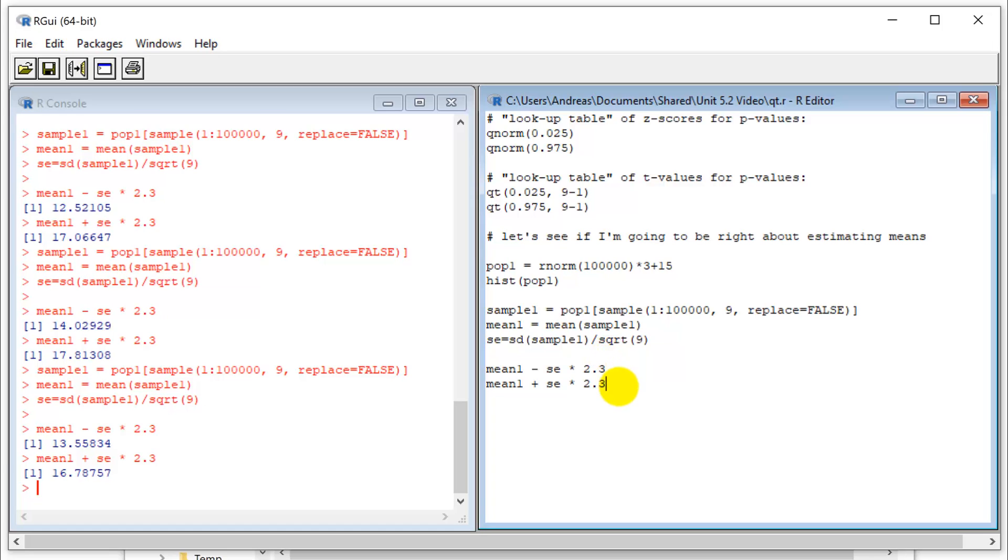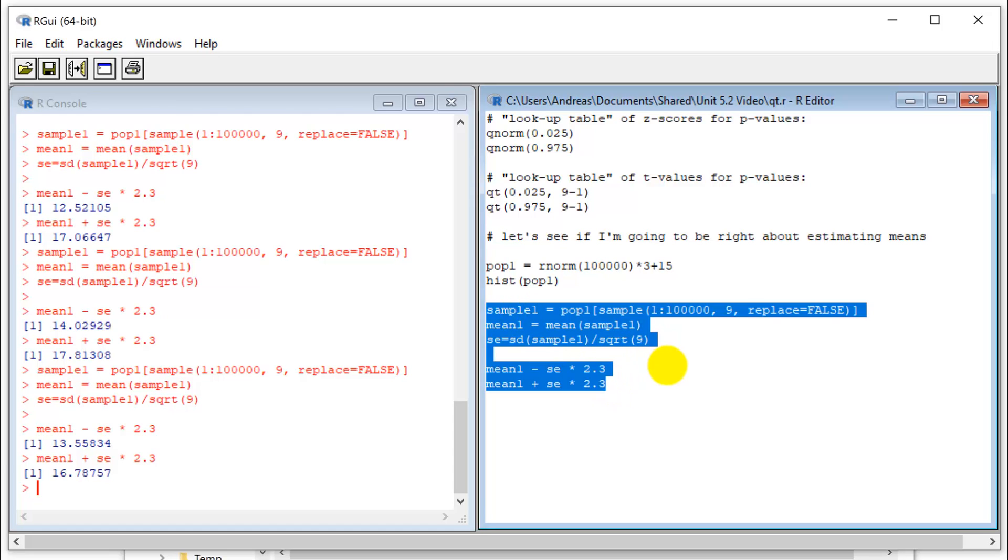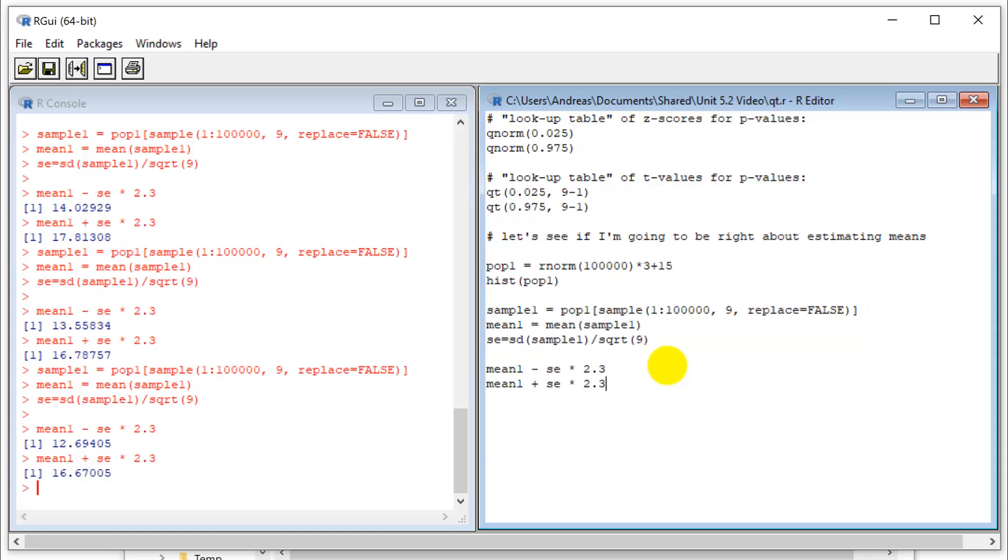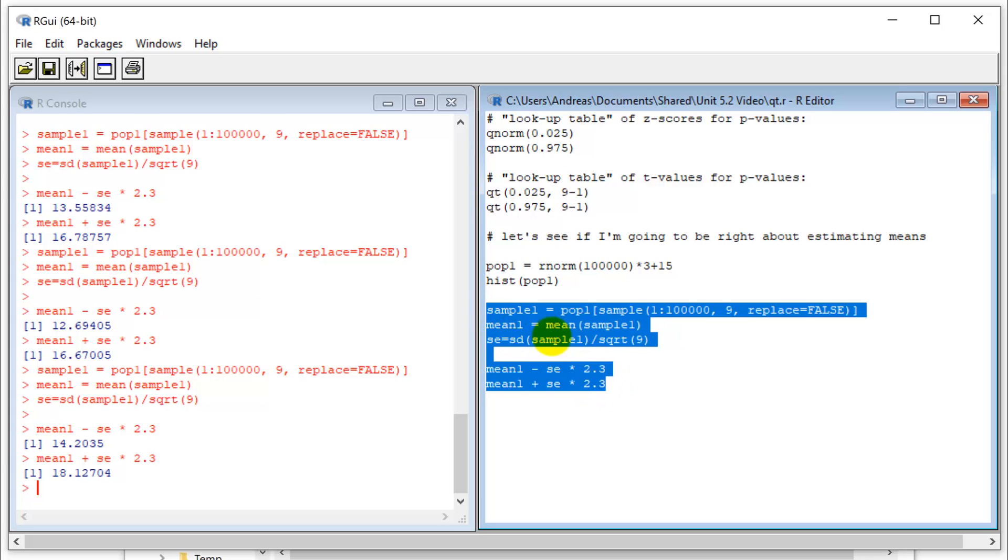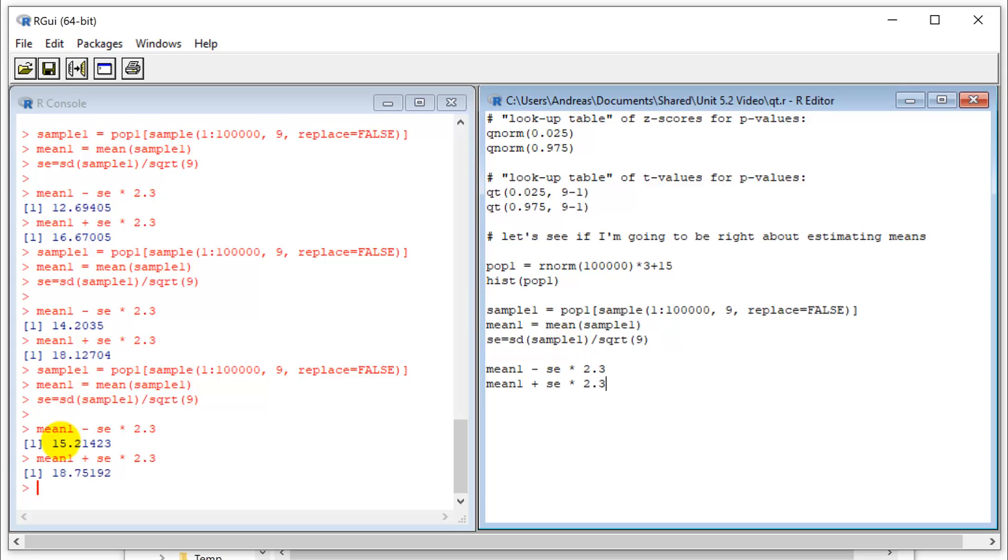So I'm not making any mistakes here, right? So I make the statement that that's the interval where my true population mean sits. I'm right again. I'm right again. This time I'm wrong. So this time my estimate was that the true population mean falls within 15 and 18. And so this can happen.